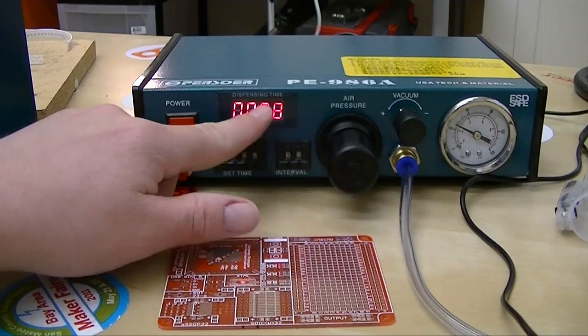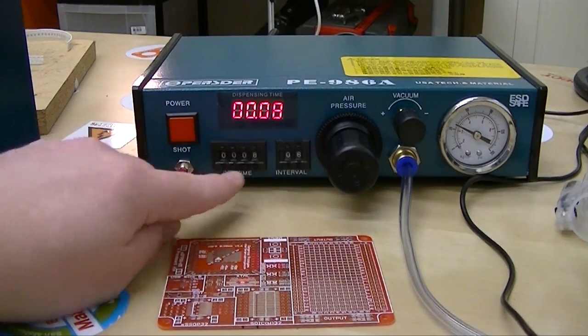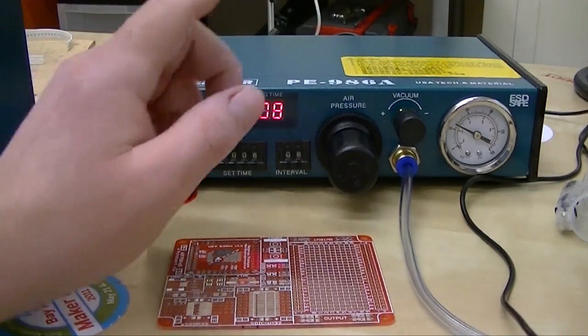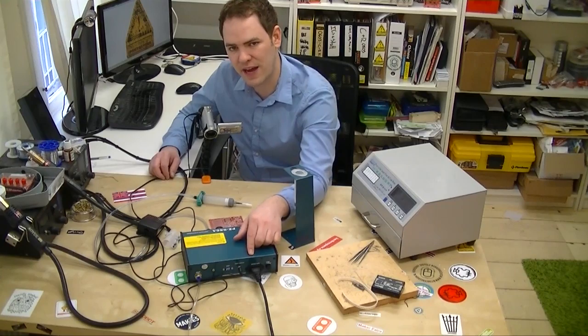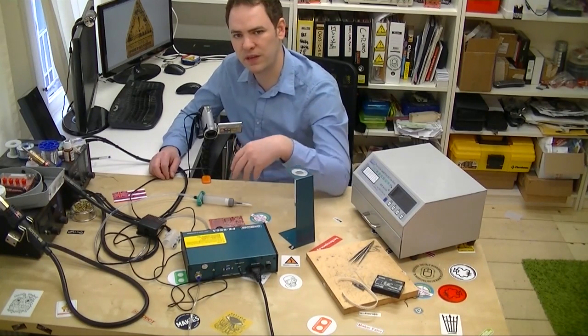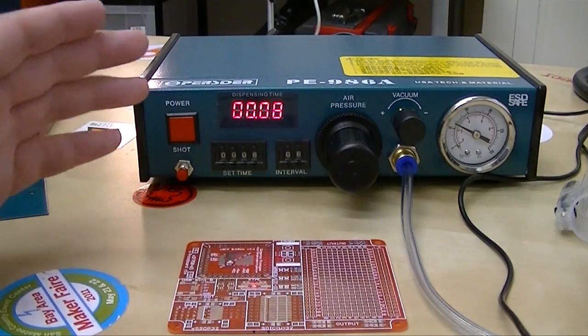It shows us the currently set dispensing time, which is in seconds or fractions of a second. That's set with this timer down here. We found .08 to be pretty good. This has 16 modes that are set with dip switches on the back, and depending on the mode you set it'll repeat the shots at certain intervals. The interval is set by the switch here, in fractions of a second.